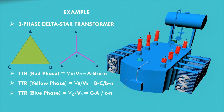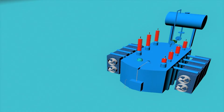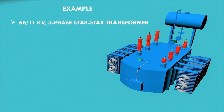For a three-phase transformer in delta-delta mode, the TTR for different phases is shown accordingly. A commonly used testing set for TTR measurement is made by the Megger company. The testing set calculates the actual turns ratio, the percentage error between the measured ratio and the nameplate ratio, as well as the excitation current and phase deviation for each phase.